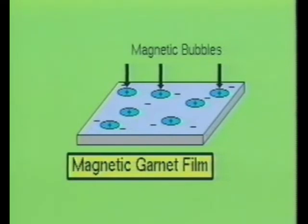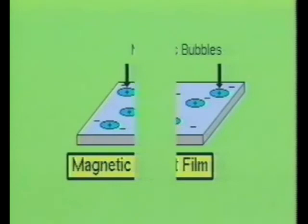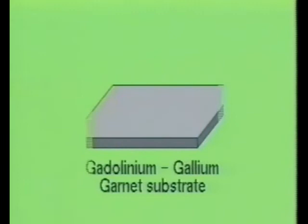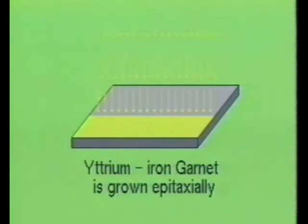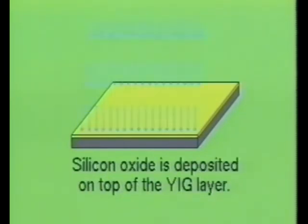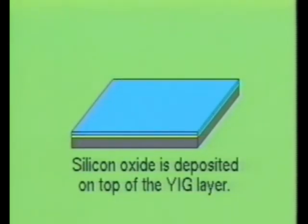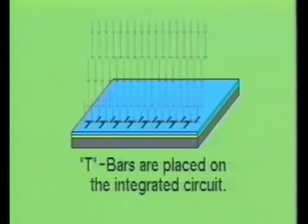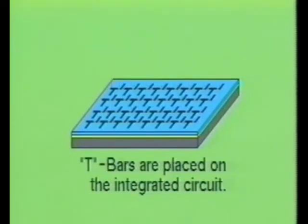We will begin by examining how the bubble memory device is fabricated. First, a non-magnetic crystal substrate like gadolinium-gallium garnet is placed in an oven. Then a film of magnetic material like yttrium-iron garnet is grown epitaxially on the crystal substrate. Next, a thin layer of silicon oxide is deposited on top of the YIG layer.